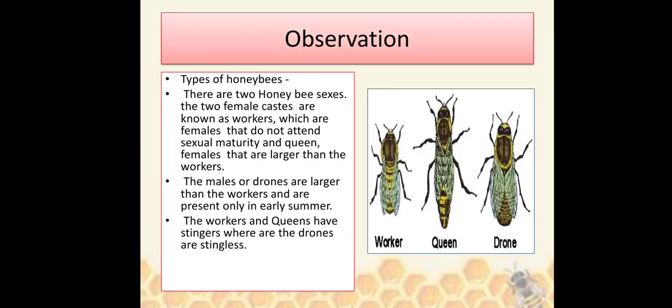Types of honeybees: There are two honeybee sexes. The two female castes are known as workers, which are females that do not attain sexual maturity, and the queen, females that are larger than the workers. The males or drones are larger than the workers and are present only in early summer. The workers and queens have stingers, whereas the drones are stingless.